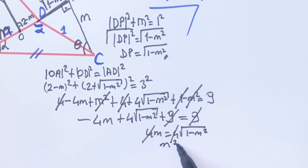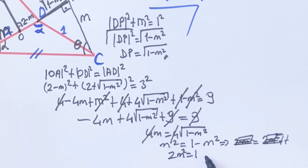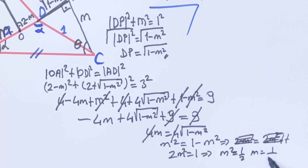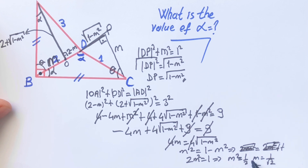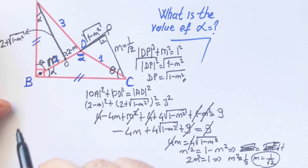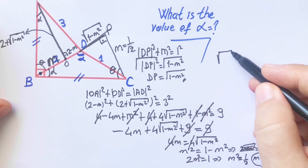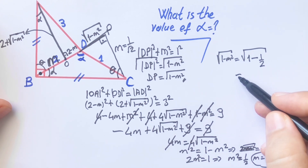Dividing both sides by 4: m = √(1 − m²), so m² = 1 − m², giving 2m² = 1. Therefore m² = 1/2 and m = 1/√2. Let's write that here: m = 1/√2, and the length √(1 − m²) = √(1/2) = 1/√2.